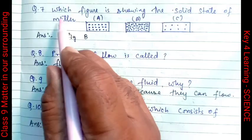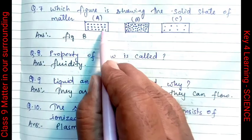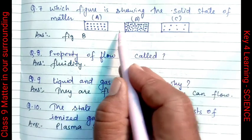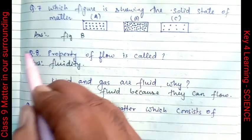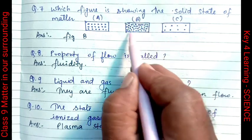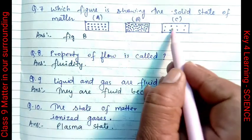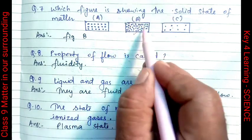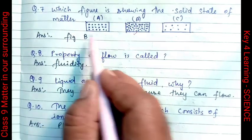The next question is: which figure — A, B, or C — is showing the solid state of matter? In the correct figure, the particles are very closely packed together. Therefore, the solid state is represented by figure B, because its particles are very closely packed.